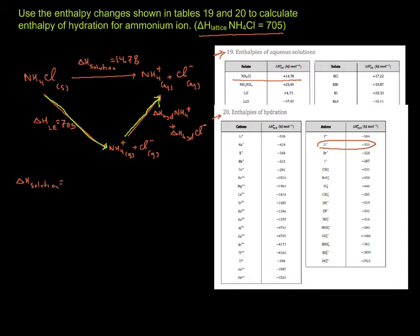Delta H solution is equal to Delta H lattice enthalpy plus Delta H hydration of ammonium, which is our question, plus Delta H hydration of chloride.